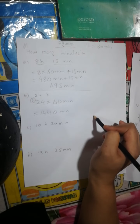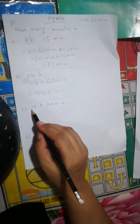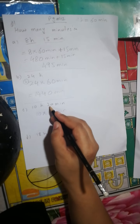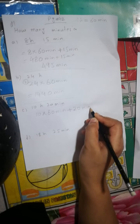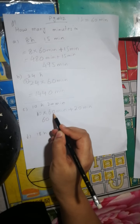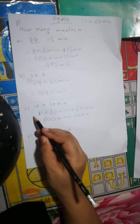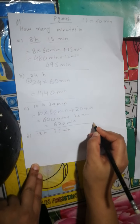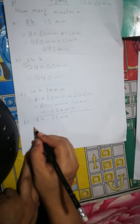Next: 10 hours — at the place of hour you write 60 minutes, and the remaining time is already in minutes so we add 20 minutes. 10 × 60 = 600 minutes, plus 20 minutes. So 600 plus 20 is equal to 620 minutes.